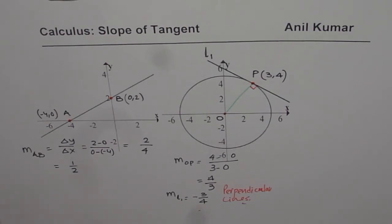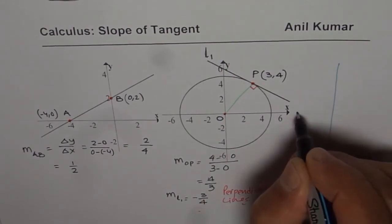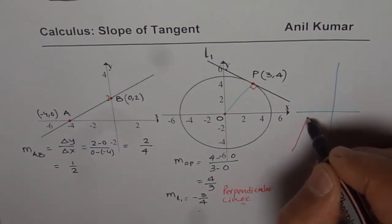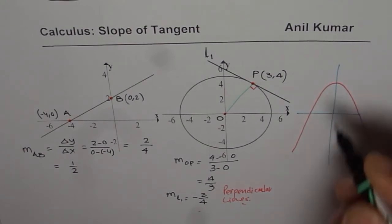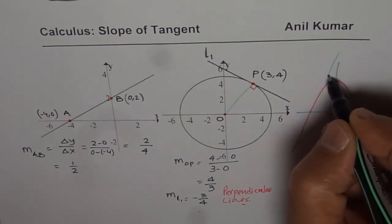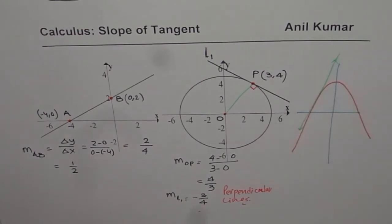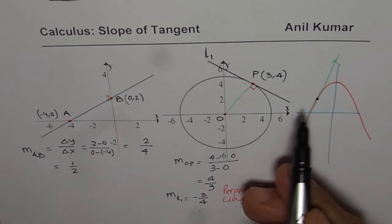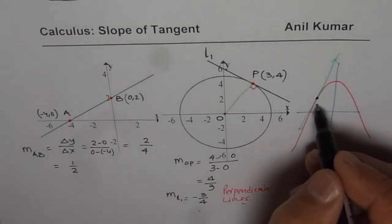I hope you understand and appreciate this strategy of finding slope of a tangent to a circle. Now the question is, if we are given some other curve and we have to find slope of tangent line. For example, if I am given a curve which is a parabola, and you need to find slope of a line which is tangent at a point, then how are you going to find it? Now in a circle, you applied one strategy. Got the solution. What are you going to do here?